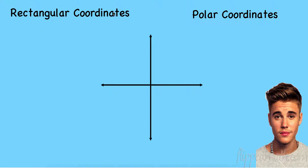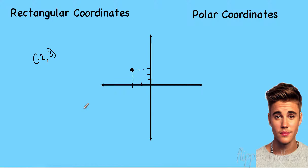Let's talk about polar coordinates. But before that, let's review rectangular coordinates. You know what rectangular coordinates are. For example, if I have the point negative two, three, I go over two units to the left and up three. The reason these are called rectangular coordinates is that when I go over and up, it forms a rectangle. We've been doing these for years — no problem with that.